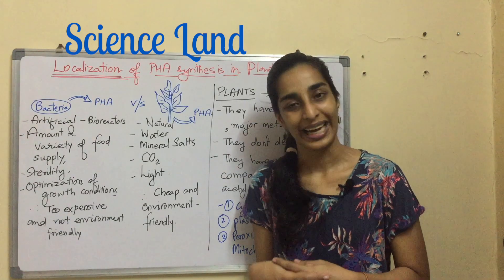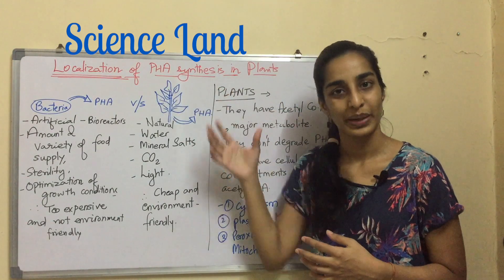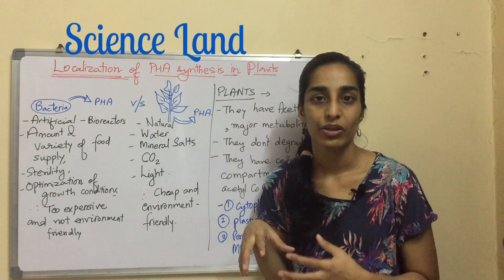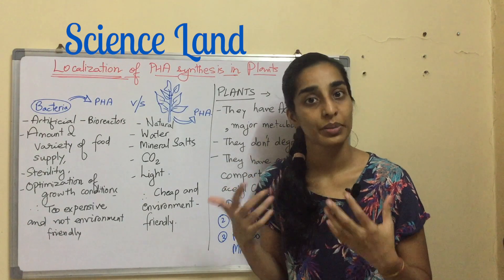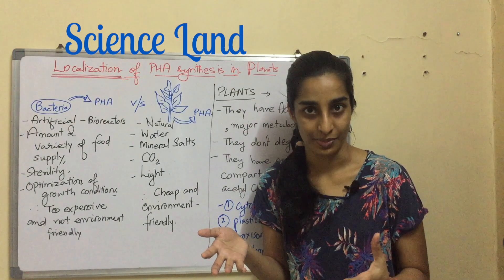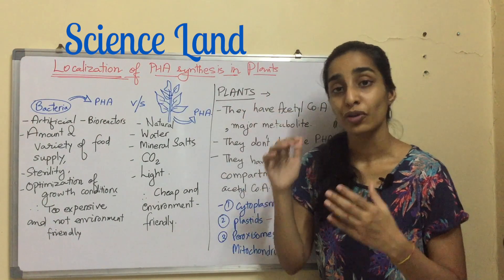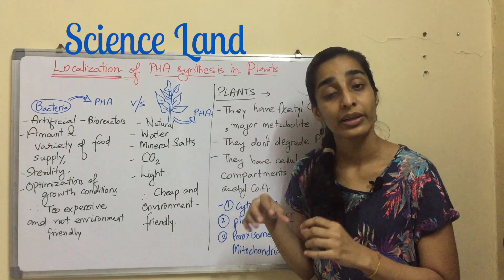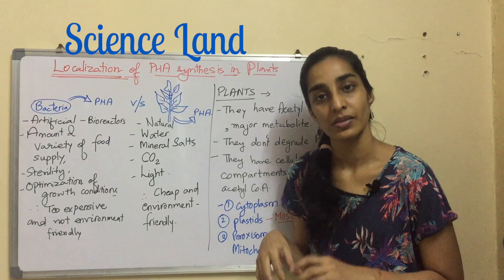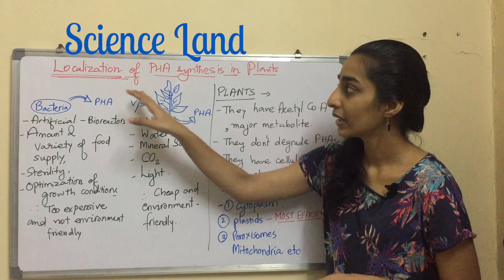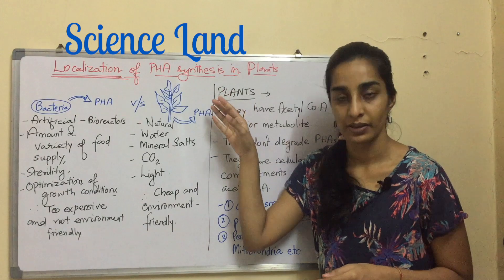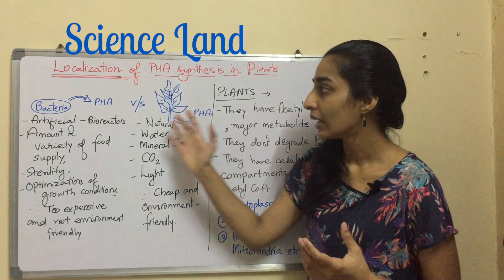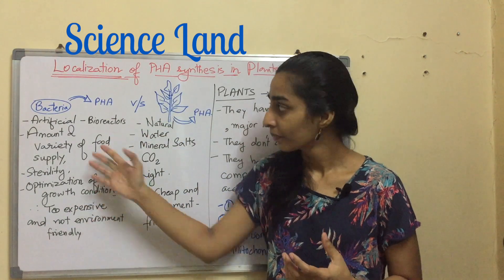PHA, as in polyhydroxyalkanoates, is a kind of biodegradable bioplastic which is naturally produced by certain microorganisms. When you try to make this compound in a restricted area or localize the synthesis in a particular area, it is known as localization of PHA synthesis, and this area is generally in a plant cell.